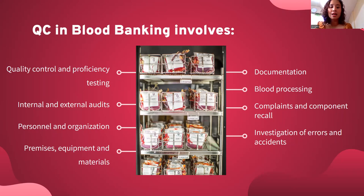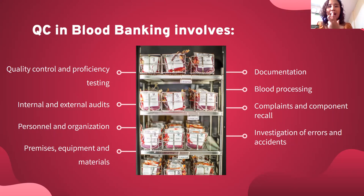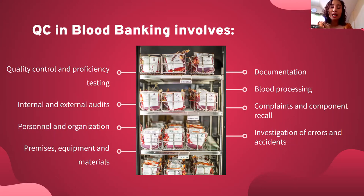Standards say that when personnel work too many hours in a day, they are more prone to errors. Premises, the environment, equipment, and materials — we must ensure the environment and conditions. The equipment and materials we buy must be documented. Units with positive HIV results, units already screened, expired units, and current inventory — blood types O, B, O negative — all documented. How we process blood, standard operating procedures, complaints, component recall, and investigation of errors and accidents are all part of QC.